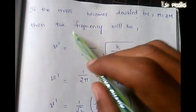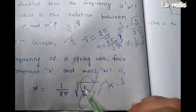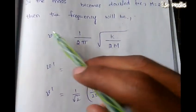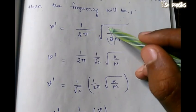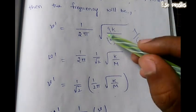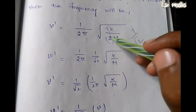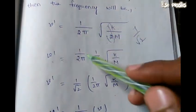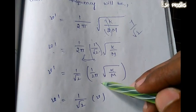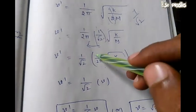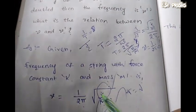If the mass is doubled, then m becomes 2m. The new frequency nu dash equals 1 by 2 pi into root of k by 2m. This gives nu dash equals 1 by 2 pi into root of k by m divided by root 2.